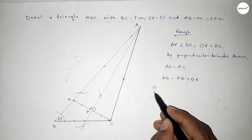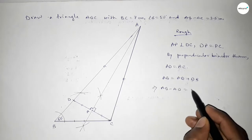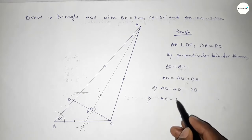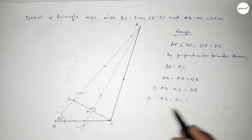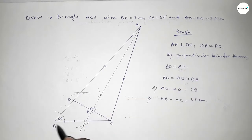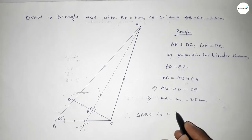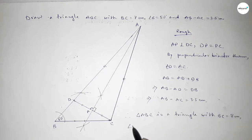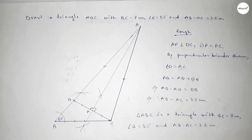So AB minus AD equals DB. Since AD equals AC, we get AB minus AC equals DB, which equals 3.5 centimeters. That's the proof. Therefore triangle ABC is the required triangle with BC equal to 7 centimeters, angle B equal to 50 degrees, and AB minus AC equal to 3.5 centimeters. Thanks for watching — if this video was helpful, please share it.